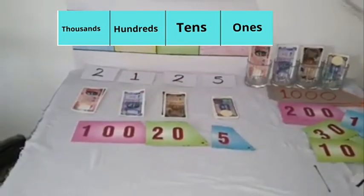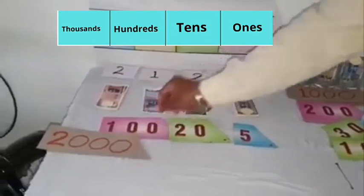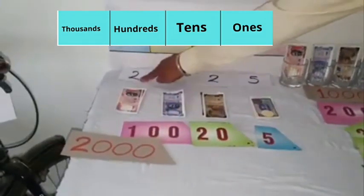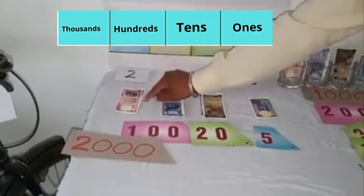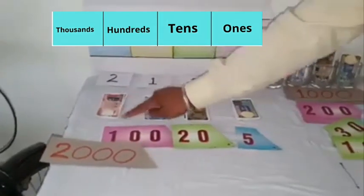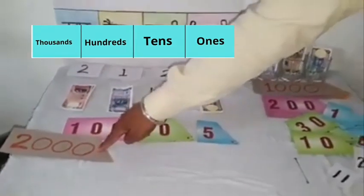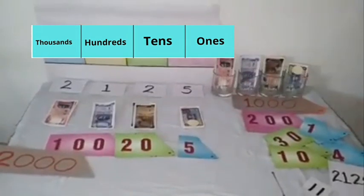Now, we have 2 at thousands place. The value of notes is 2,000 rupees. Man card is of 2,000, so the place value of 2 at thousands place is 2,000.